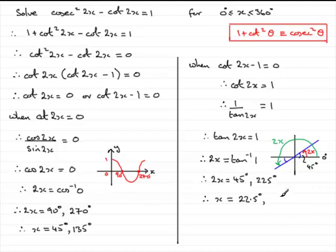So all in all, our solutions, if we were to put them in order of size, would be that x equals 22.5 degrees, 45 degrees, 112.5 degrees, and finally 135 degrees. So I hope you've been able to follow that, and that brings us to the end of this question.